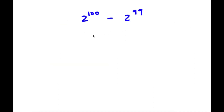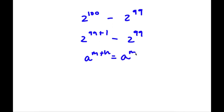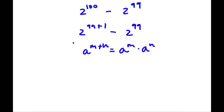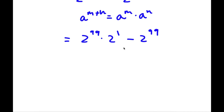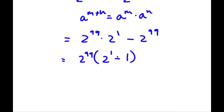Now I have 2 to the power of 100 minus 2 to the power of 99. We can rewrite 2 to the power of 100 as 2 to the power of 99 plus 1, minus 2 to the power of 99. Using the property a to the power of m plus n equals a to the power of m times a to the power of n, I rewrite 2 to the 99 plus 1 as 2 to the power of 99 times 2 to the power of 1. Then I have minus 2 to the power of 99. Factoring out 2 to the power of 99, I get 2 to the power of 99 times 2 to the power of 1 minus 1.